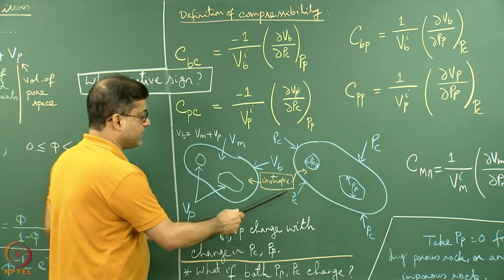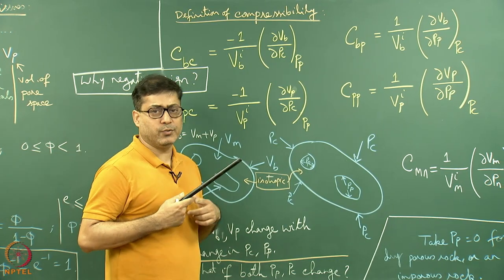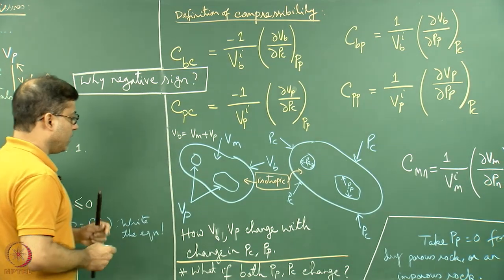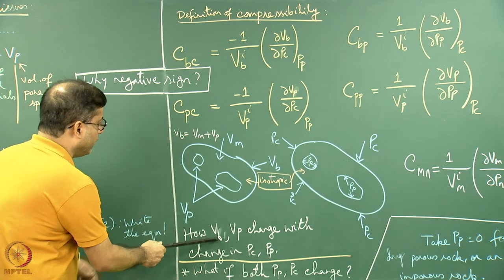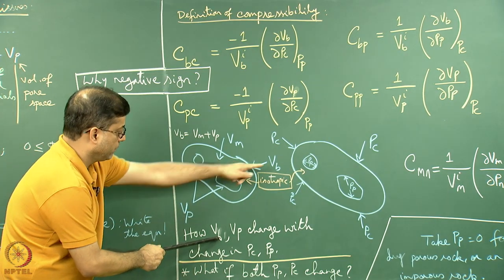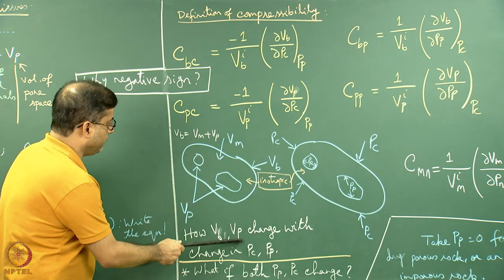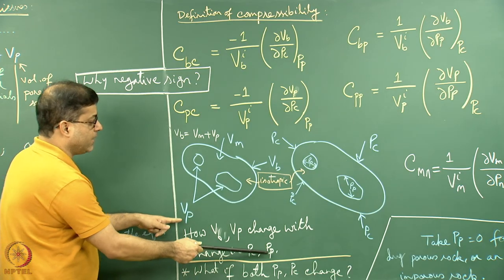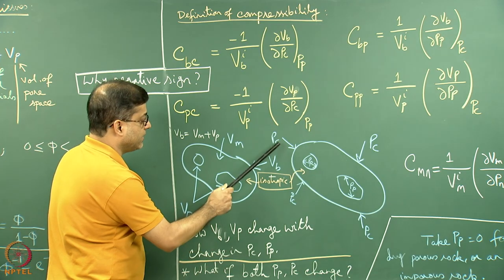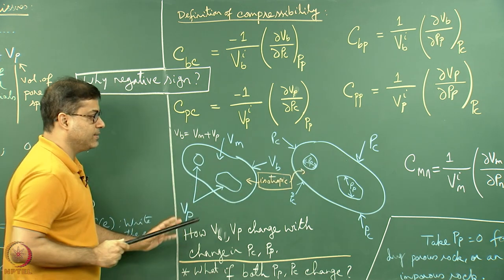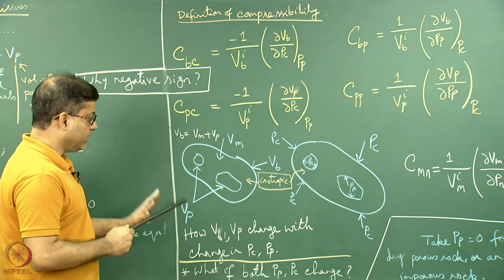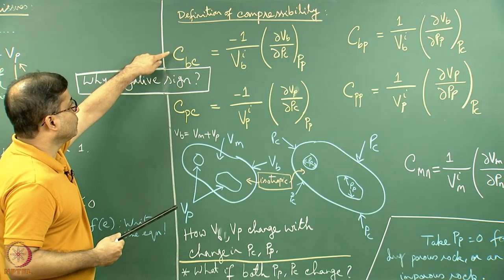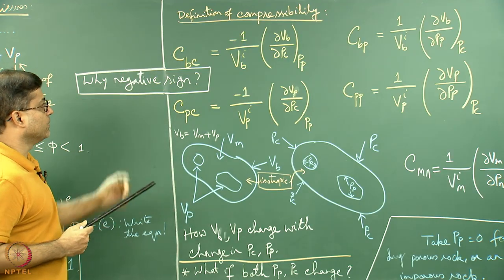We can see that Pc and Pp are in opposite directions to each other. We are going to see how Vb and Vp change with changes in Pc and Pp. This is the starting point, from where we come into the definition of compressibility.